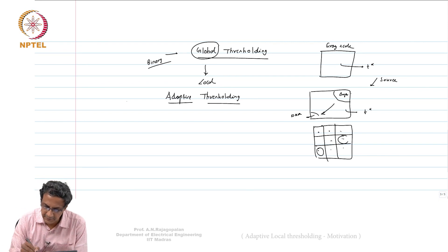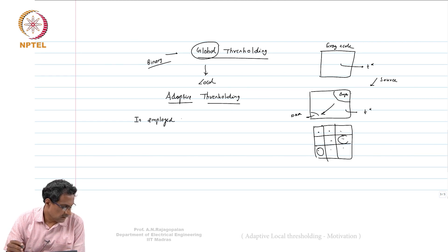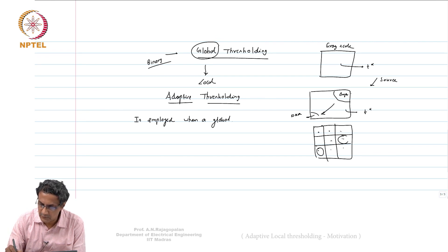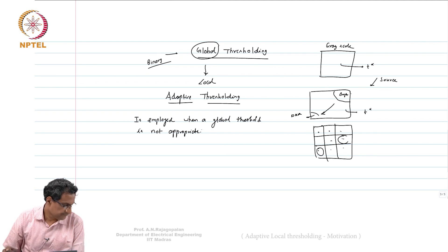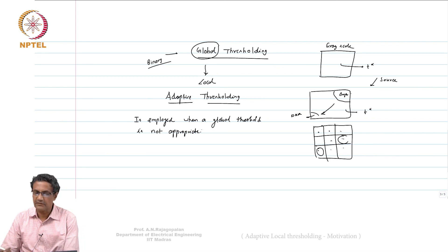Adaptive thresholding is employed when a global threshold is not appropriate — for example, due to illumination variation.